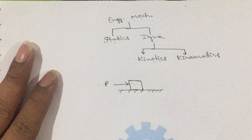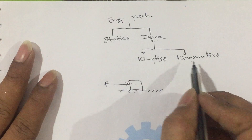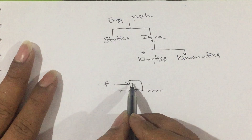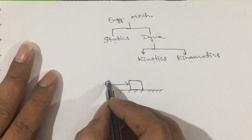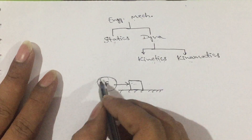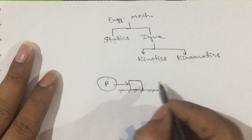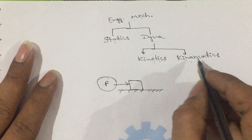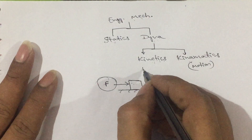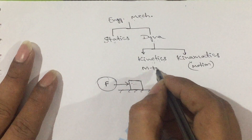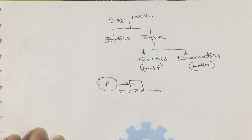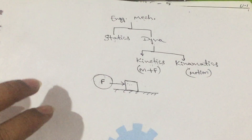What do we mean by kinematics? It is also the study of bodies, but by neglecting the effect of the forces causing the motion. In kinetics, we consider the force and its effect. In kinematics, we neglect the force and its effects — we consider only the motion of the body. In kinetics, along with the motion of the body, we consider the effect of the force. With this introduction, I will start module 5.